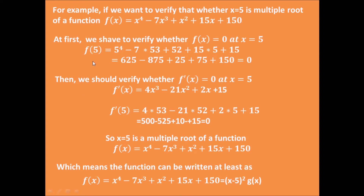Then, based on these two steps, we can confirm that x equals 5 is a multiple root of function f, which means this function can be written at least as (x minus 5) squared times another function g. That's all for today. Thank you for watching.